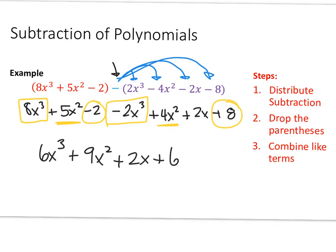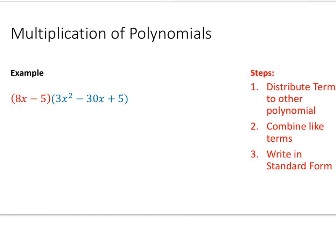Continuing to combine like terms: 5x squared plus 4x squared gives plus 9x squared, plus 2x stays, and negative 2 plus 8 gives plus 6. So our result is 6x cubed plus 9x squared plus 2x plus 6. The key point is that these two polynomials represent different quantities being subtracted, so we distribute the negative first, then combine like terms, always writing the result in standard form from highest to lowest degree.